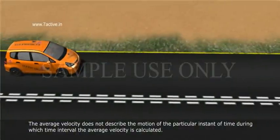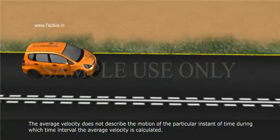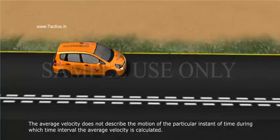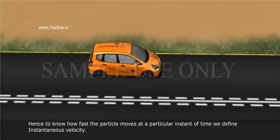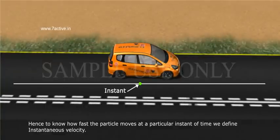The average velocity does not describe the motion of the particular instant of time during which time interval the average velocity is calculated. Hence, to know how fast the particle moves at a particular instant of time, we define Instantaneous Velocity.